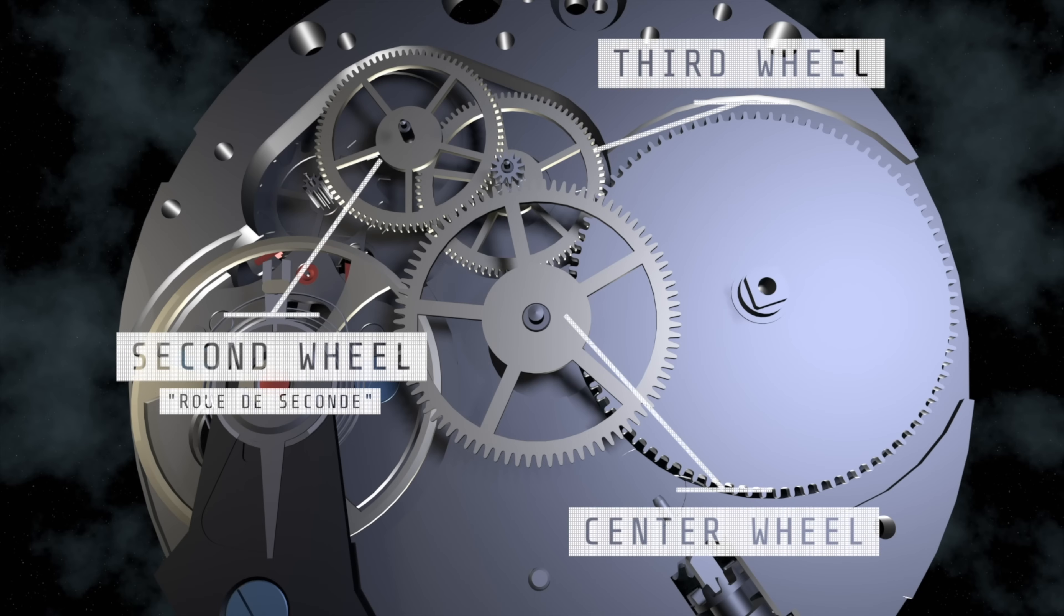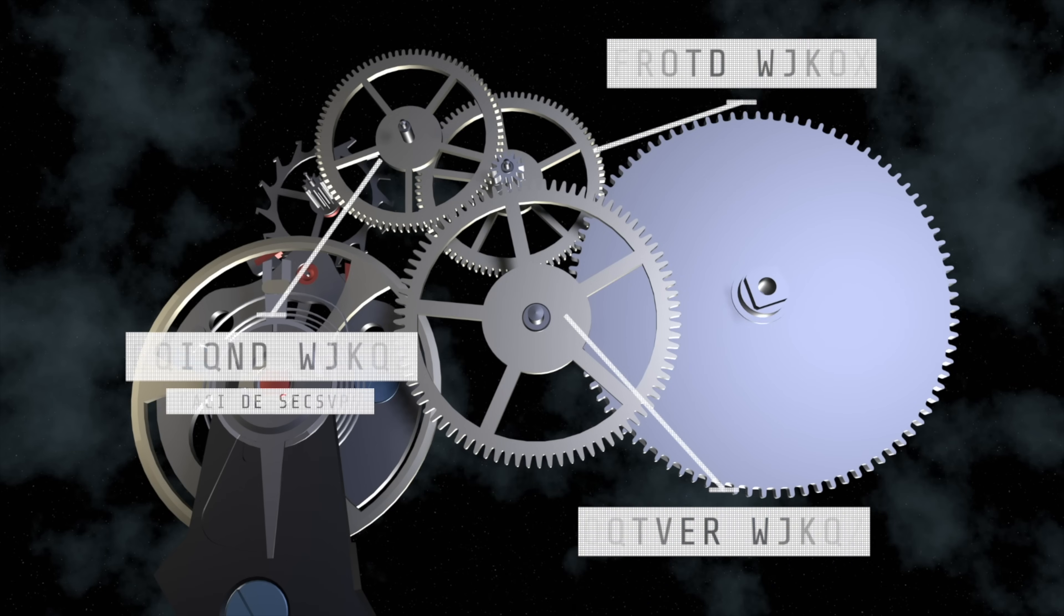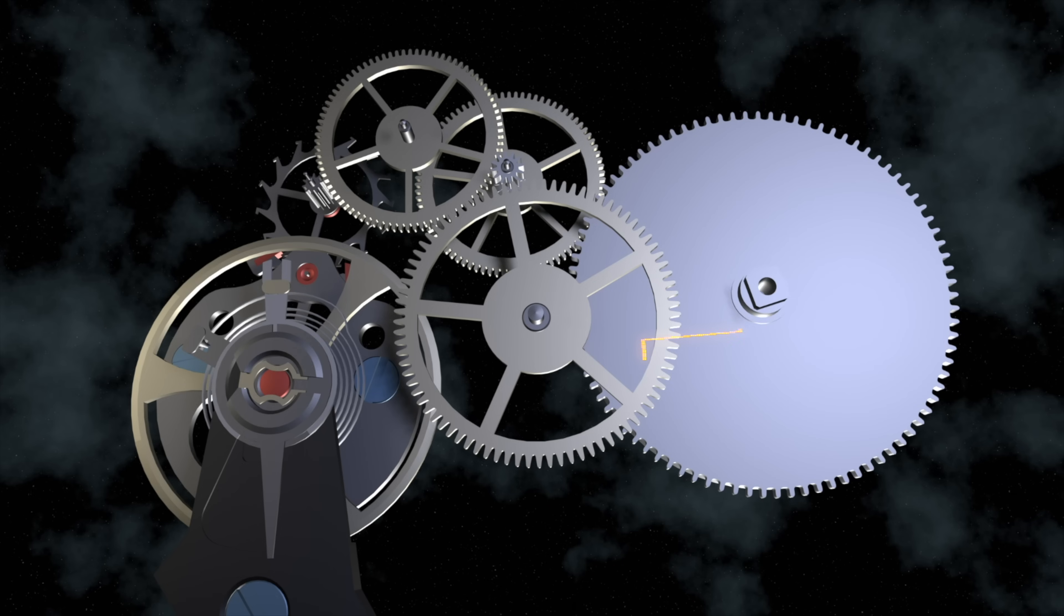The escape route for that energy is the going train. As the mainspring unwinds, it transfers its energy through the going train. The escape route eventually leads that energy to the escapement, which brings us to energy regulation.